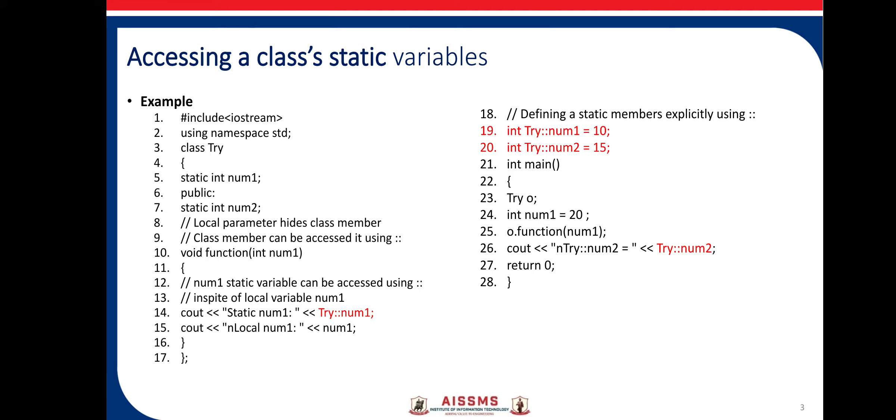Starting with accessing a class's static variables. Here is the example. At line number 5, you can see a static variable is defined. And again, at line number 7, also a static variable is defined. To define a static variable, we need to use the keyword static. When I want to use a static variable in the member function, the Scope Resolution Operator is useful, as shown at line number 14 and 15. The Scope Resolution Operator is only used at line number 14, because we need to access the class variable — that is the static class variable, static int num1. That's why the red highlighted portion is shown at line number 14.